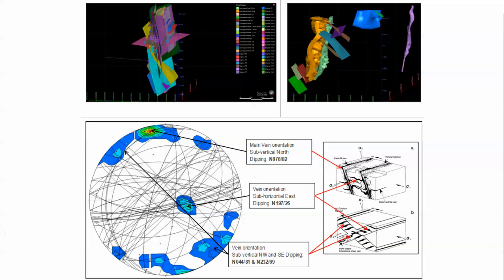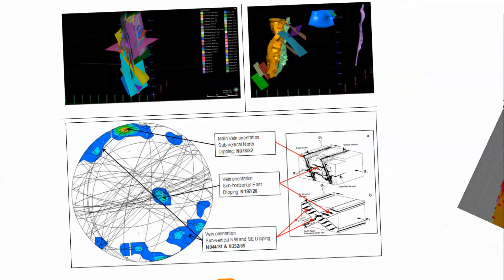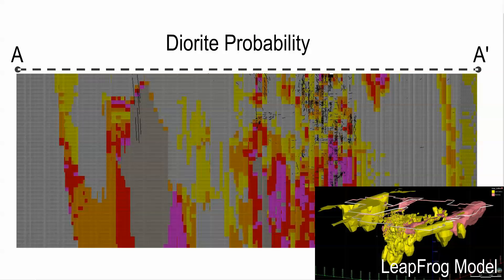This is part of the analysis that JP completed to model the three main vein orientations in LeapFrog. Although LeapFrog did a good job of modeling the key lithologies, in this case the brittle rock types that are the primary host to mineralization, the shapes are relatively unreliable in areas further from drilling information.